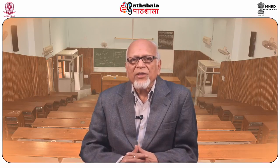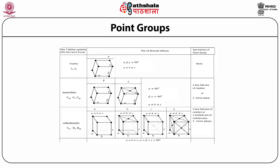In three dimensions, there are 14 Bravais lattices and seven lattice systems. The lattice systems can have different lattice types: namely the primitive lattice, the face-centered lattice, the side-centered lattice, the body-centered lattice, and the rhombohedral lattice, all shown in the slides.